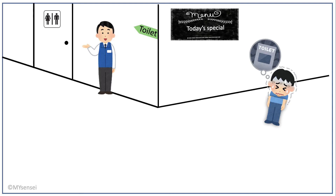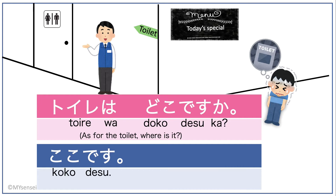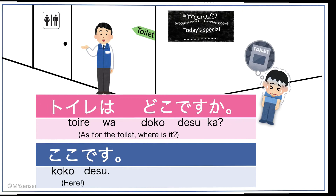Now you know how to ask the question. What would the boy say to ask for directions to the bathroom? He would say, 'Toire wa doko desu ka' — where is the toilet. The man working at the restaurant would say, 'Koko desu' — here — since he is closer to the toilet or bathroom.